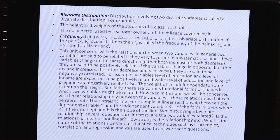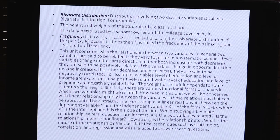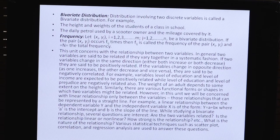Frequency वह होती है जिसमें कोई भी variable आने के chances, या बार-बार कितनी बार वह repeat हो रहा है। Suppose X_i and Y_j, where i = 1,2,3 to M and j = 1,2,3 to N be a bivariate distribution। If a pair (X_i, Y_j) occurs F_ij times, then F_ij is called the frequency of the pair (X_i, Y_j) and total frequency is denoted by N - summation of F_ij।